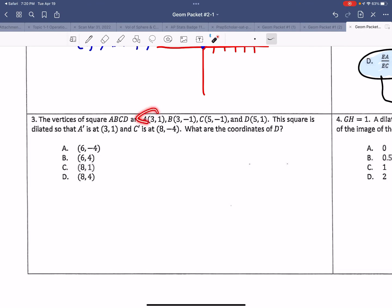So, all right, what do we have here? We have some coordinates, and then it says the square is dilated so that A prime is at (3,1). So let's go ahead and graph this quickly. So we have a square, (3,-1), (5,-1), (5,1). Okay. So here's our square. A, B, A, B, C, D. If this square is dilated so that A prime is (3,1). Okay. So A prime is (3,1).